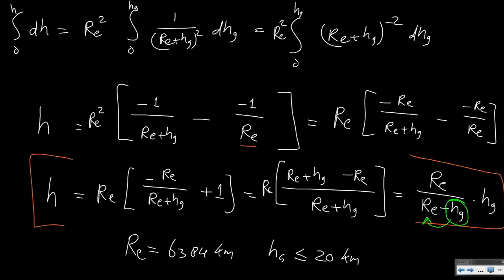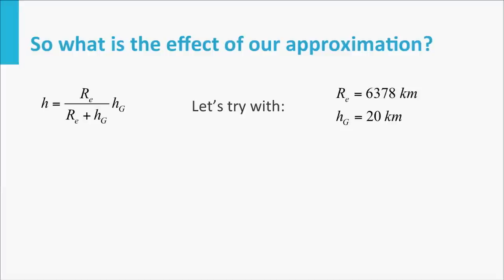But we can also look at an actual value. Let's take the example of 20 km and see what the effect really is — what the percentage error is when we use the geopotential altitude instead of the geometric altitude. We know that the average earth radius is 6,378 km, and let's use a very high altitude of 20 km to see the difference.